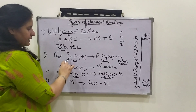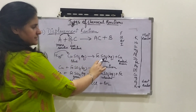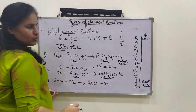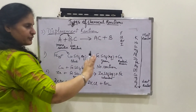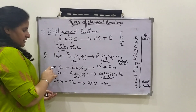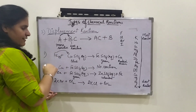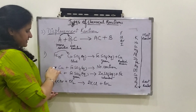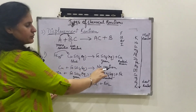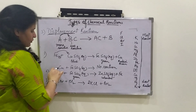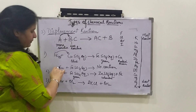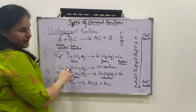Iron takes the place of copper and forms iron sulphate. On the iron nail, you will see a reddish brown coating of copper, meaning copper is left out from the solution. Now if the reverse had happened — if copper were dipped into iron sulphate solution — no reaction would take place because copper is less reactive than iron, so copper cannot take the place of iron.